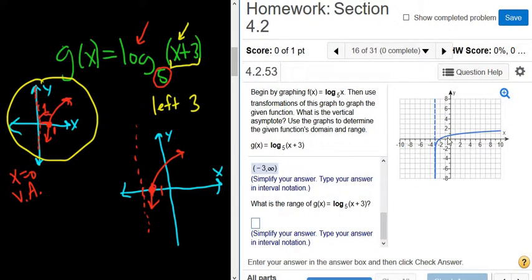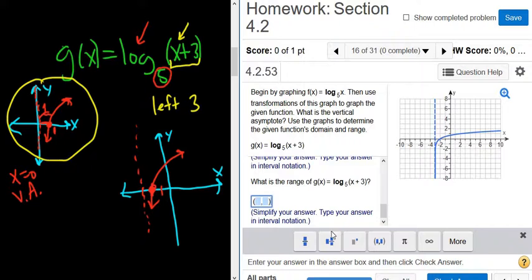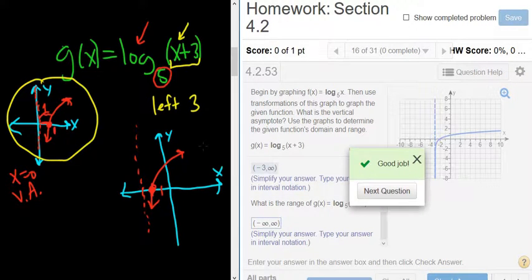And the range is always going to be all real numbers. I know it looks like it's going to stop going up, but the logarithmic function goes up really, really slowly. So it's going to be negative infinity to infinity from the bottom up. So it'll be negative infinity to infinity. Let's try it. Yep. And that's it. So I hope that helped.